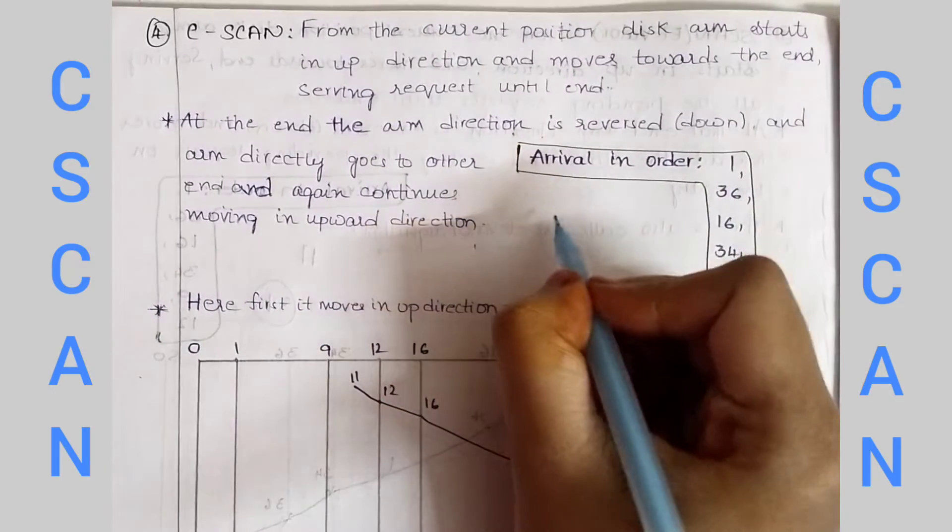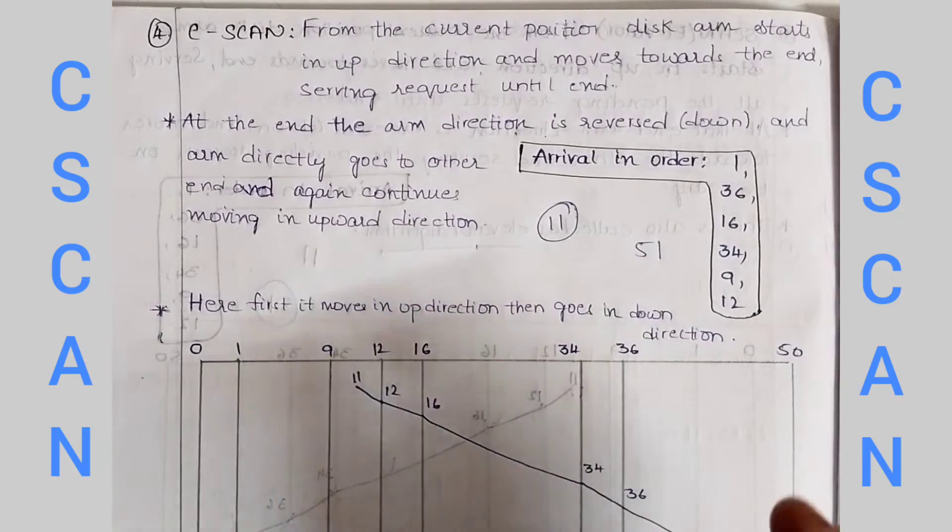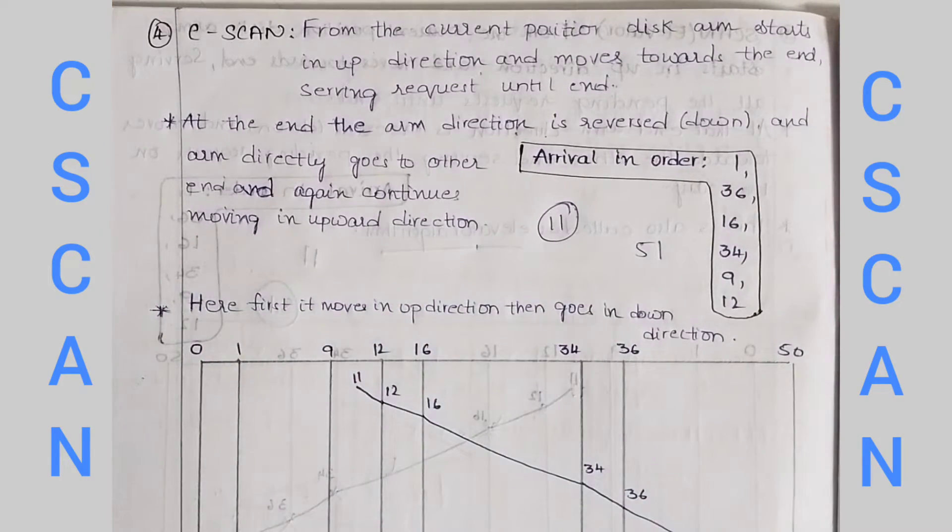The arrival order is current position 11, 51 cylinders. This is the C-scan algorithm just as similar to scan algorithm.